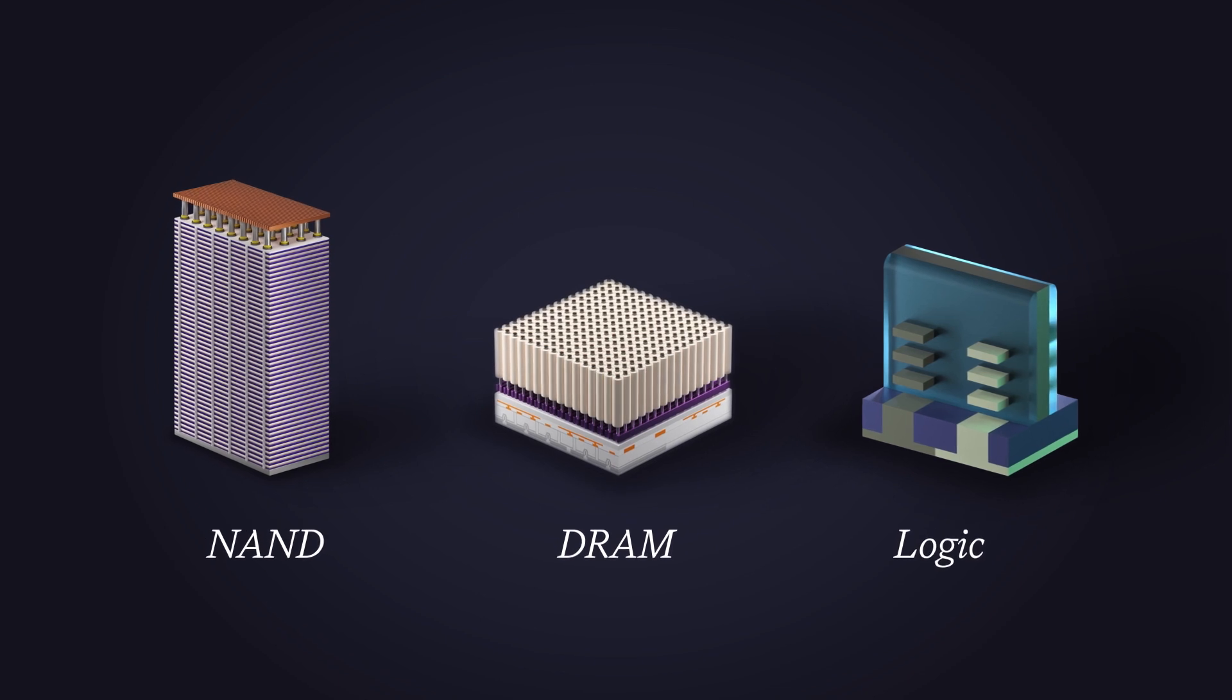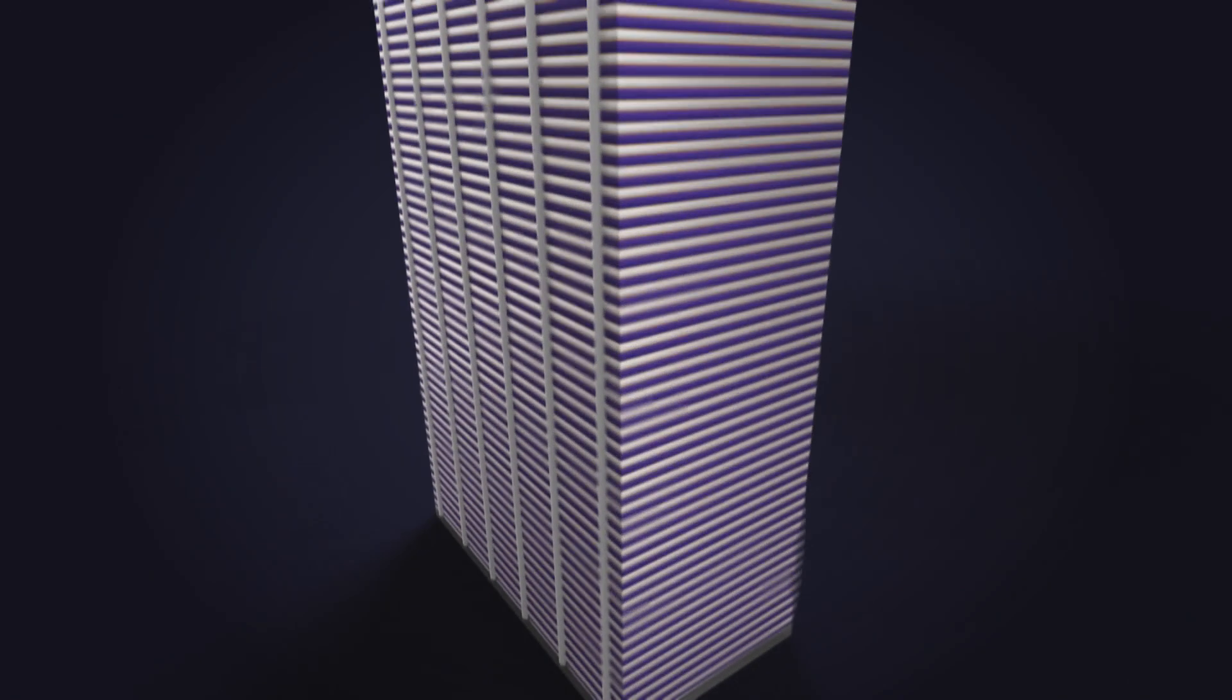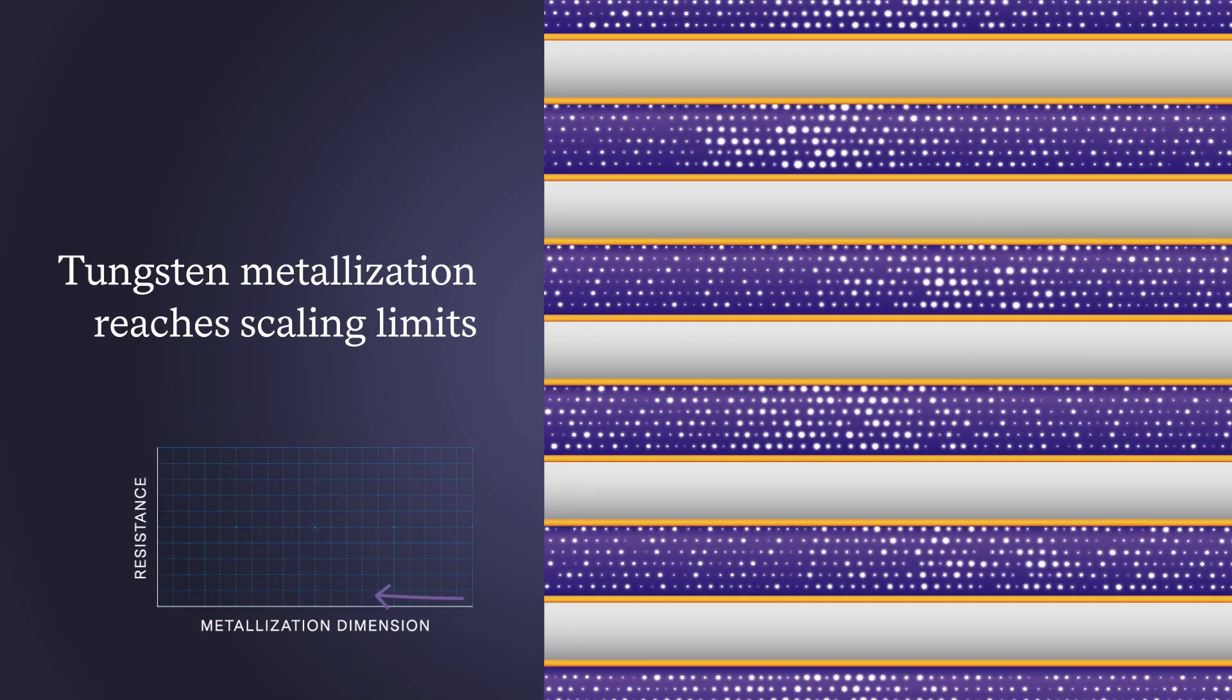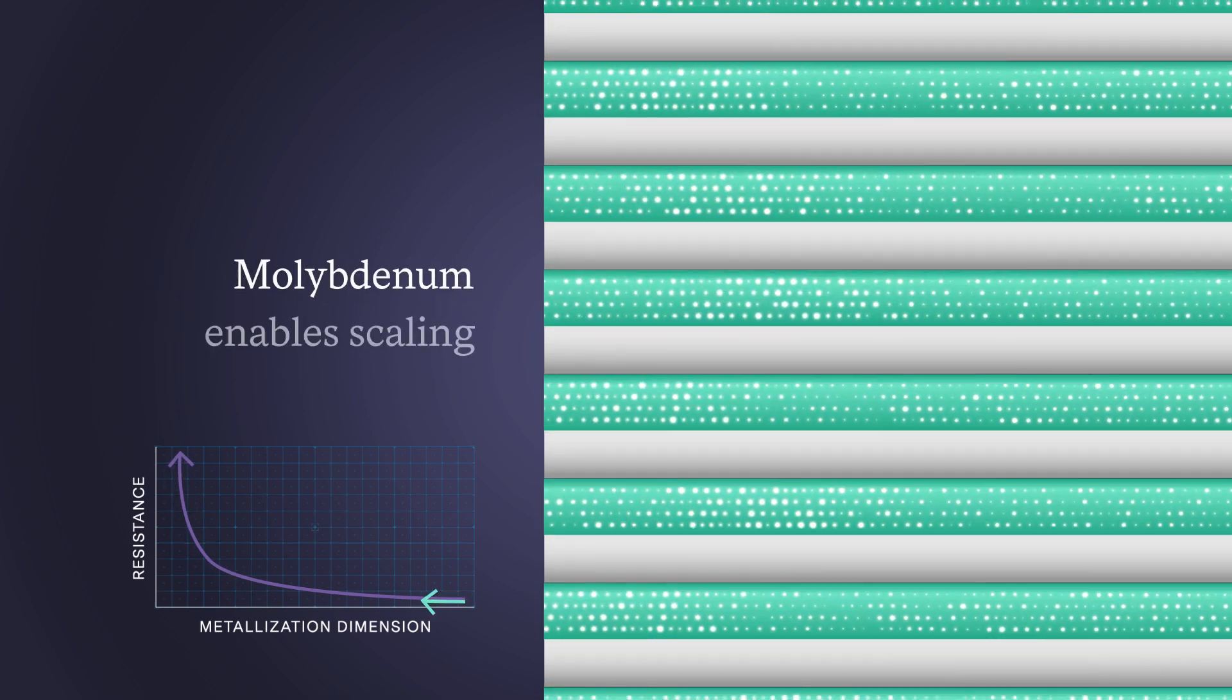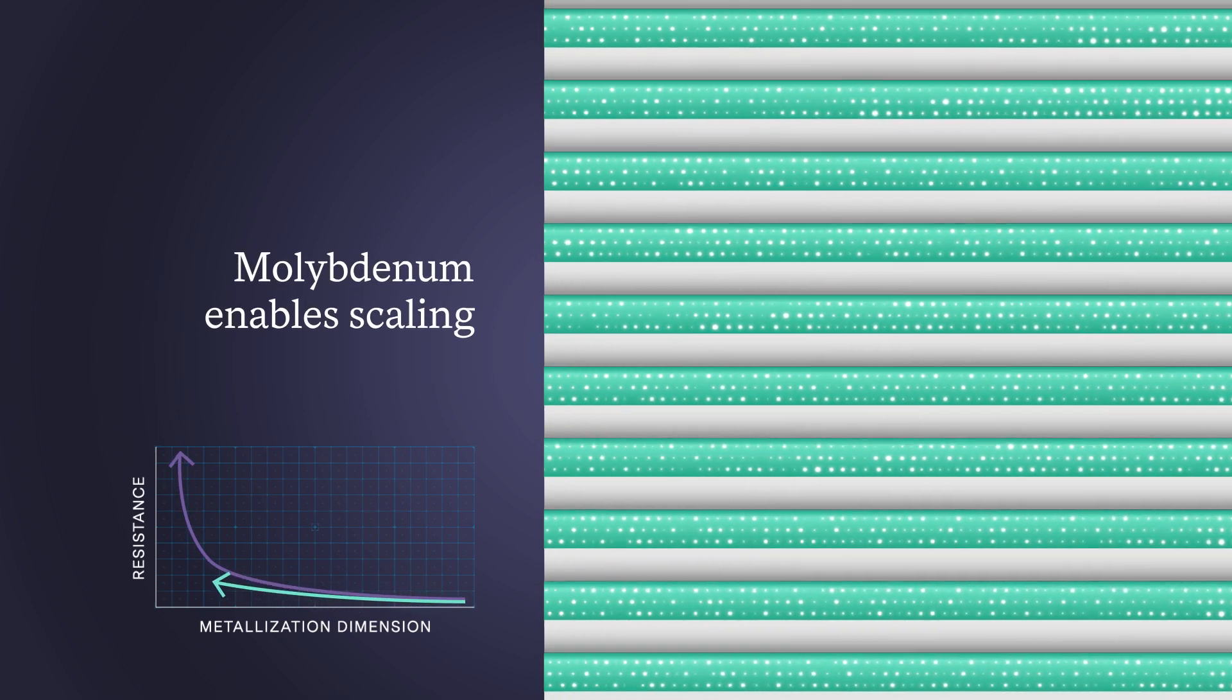Across NAND, DRAM, and Foundry Logic, chip makers are transitioning to molybdenum, or moly interconnects, due to the material's ability to provide low resistance and barrierless integration.